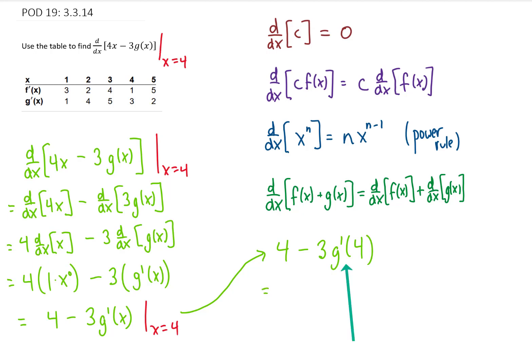Now if we want to find g prime of 4, we have to go back up to this table. Look at the g prime of x row. At the x equals 4 column, I see that g prime of 4 equals 3. So I'm going to replace g prime of 4 with 3. We end up with 4 minus 9, which is negative 5 as our final answer.